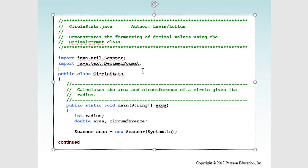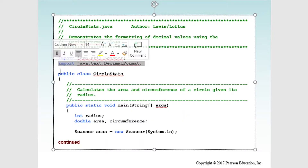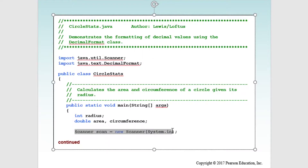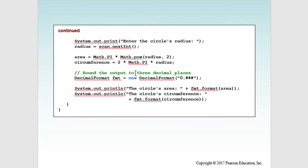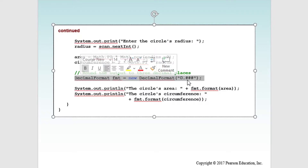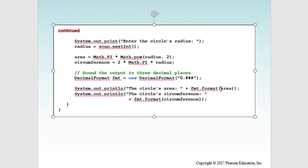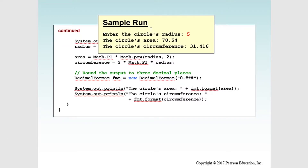Here is circleStats.java. They imported the DecimalFormat class and created a scanner object. They have some variables for data and prompted for data. Then they use their DecimalFormat object to format numbers to have three decimal places. They take their numbers and invoke format on those numbers. And this is what the output looks like.